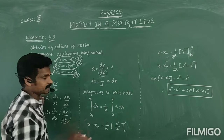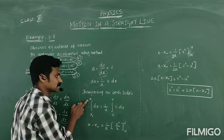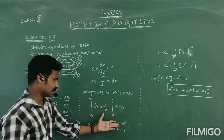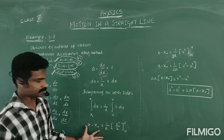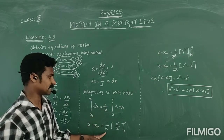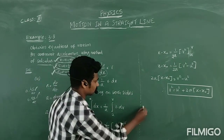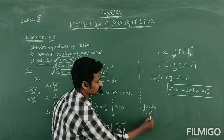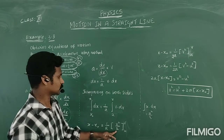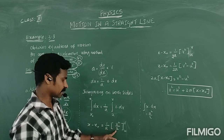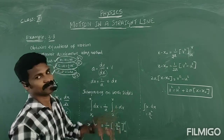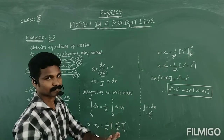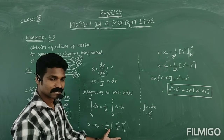On the left side, A is constant and taken outside, so we have A times the integral of DX, giving A times (X minus X₀). On the right side, integral of V·DV equals V squared divided by 2. Applying the limits U to V: V squared over 2 minus U squared over 2. Taking 2 as common outside: one over 2A times (V squared minus U squared).